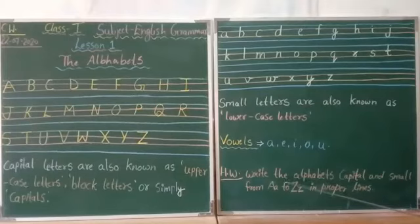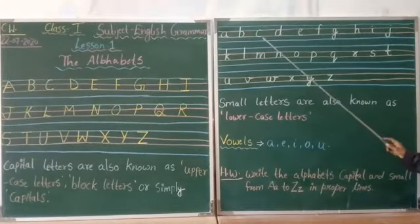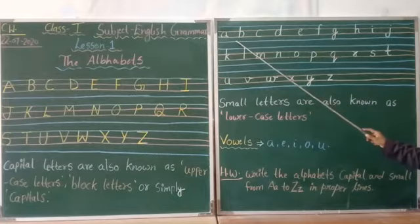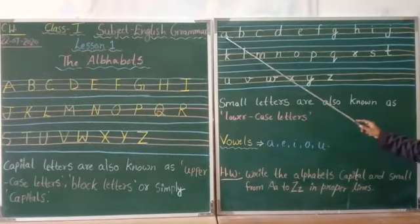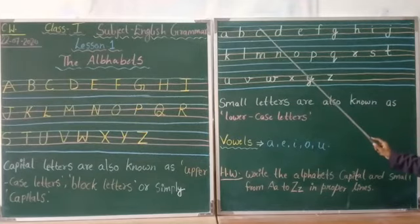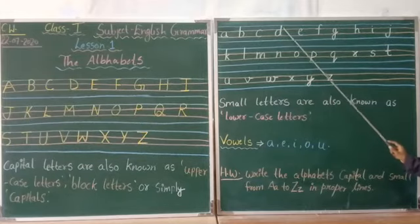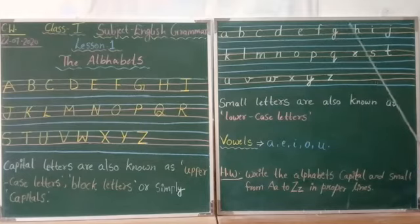Now we will learn small letters. Look at here students how to write small letters. In which lines we have to write? A, we have to write in 2 lines. B, in 3 lines. C, in 2 lines. D, in 3 lines. E, in 2 lines. F, 3 lines. G, in 3 lines down.